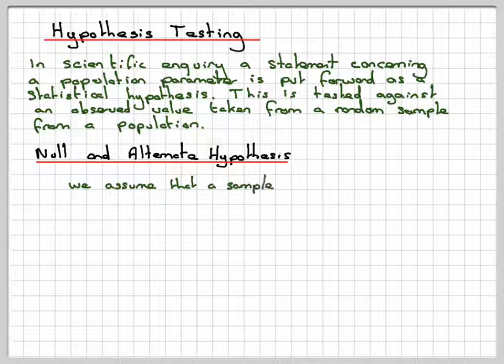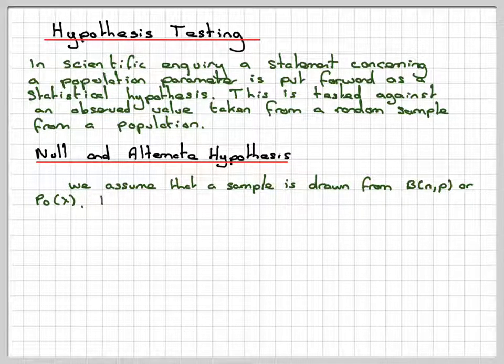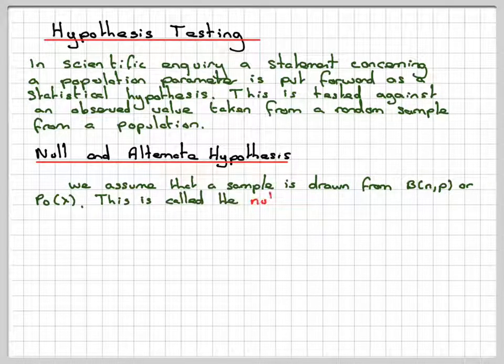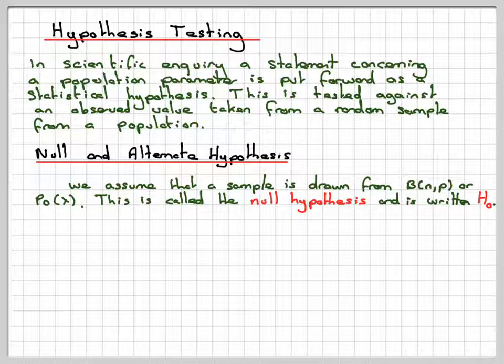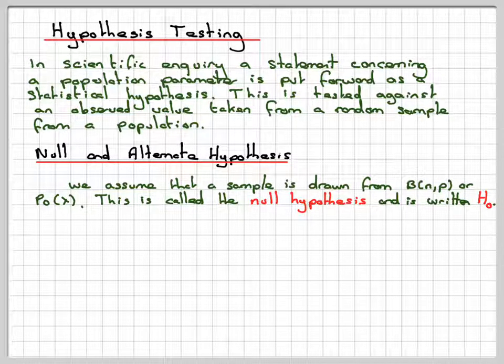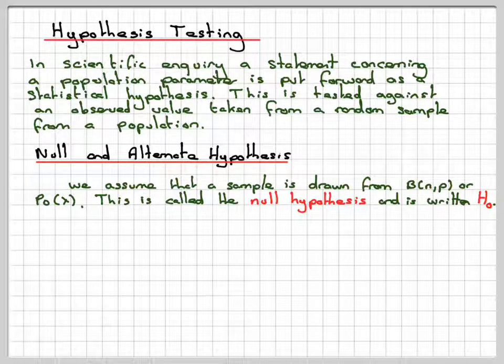We assume that the sample is drawn from a binomial distribution or Poisson distribution, but this also works for other distributions as well. But in this course we're generally interested in those two. This is called the null hypothesis. So that would be the example I just gave where I said that P, the chance of passing an exam would be 0.4, where P would be equal to 0.4 for a binomial distribution.